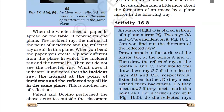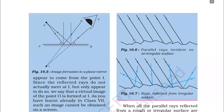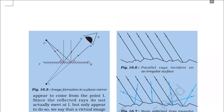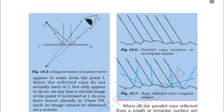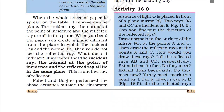In this session we are going to discuss Activity 16.3 and 16.4. In Activity 16.3, a source of light O is placed in front of a plane mirror PQ — as shown in figure 16.5. Two rays OA and OC are incident on the mirror. Draw normals to the surface of the mirror PQ at points A and C.